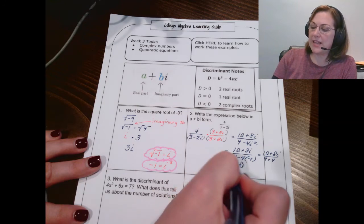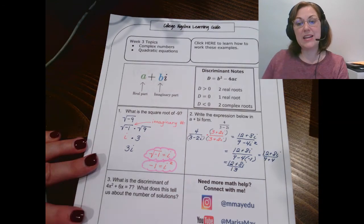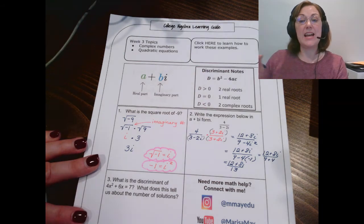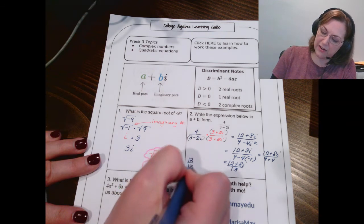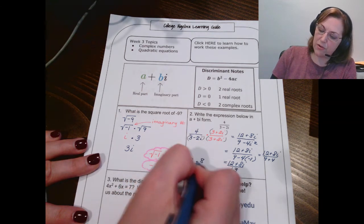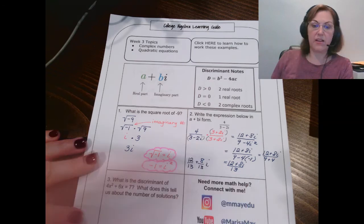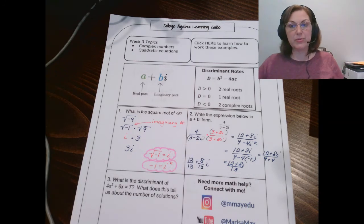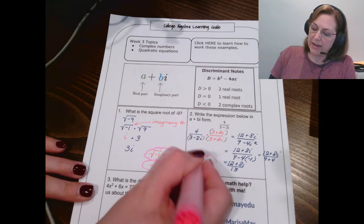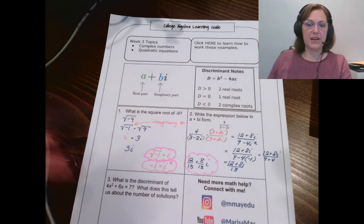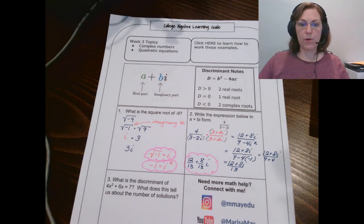Now, one last step to write it in this form that it's asked us for is split it up into two fractions. I've got 12 over 13 plus 8 over 13i. And I hope you can see where I just split those terms in the numerator by giving them both the denominator.